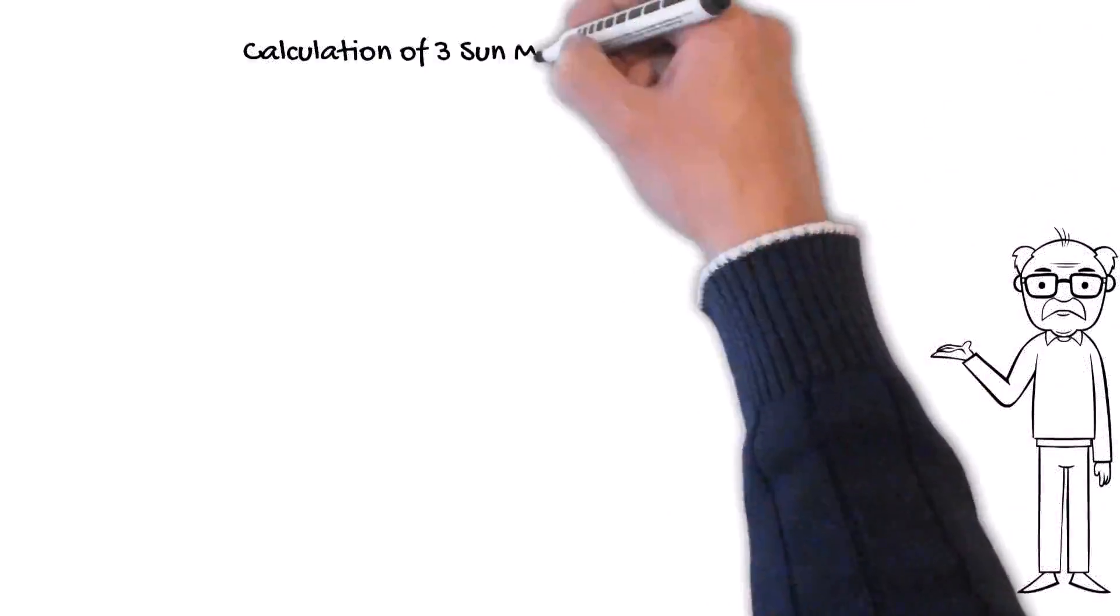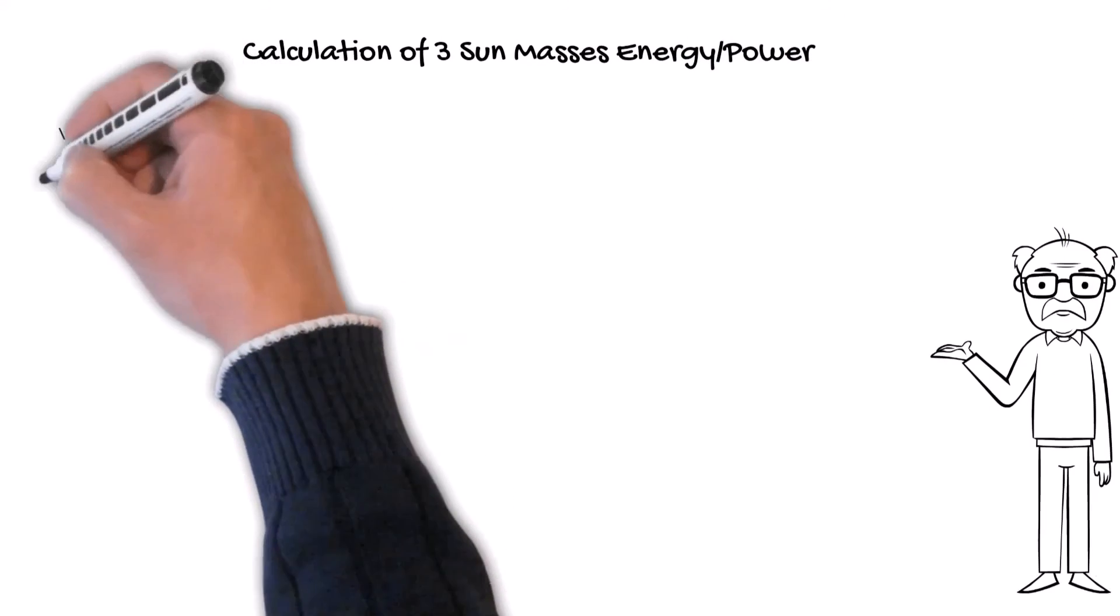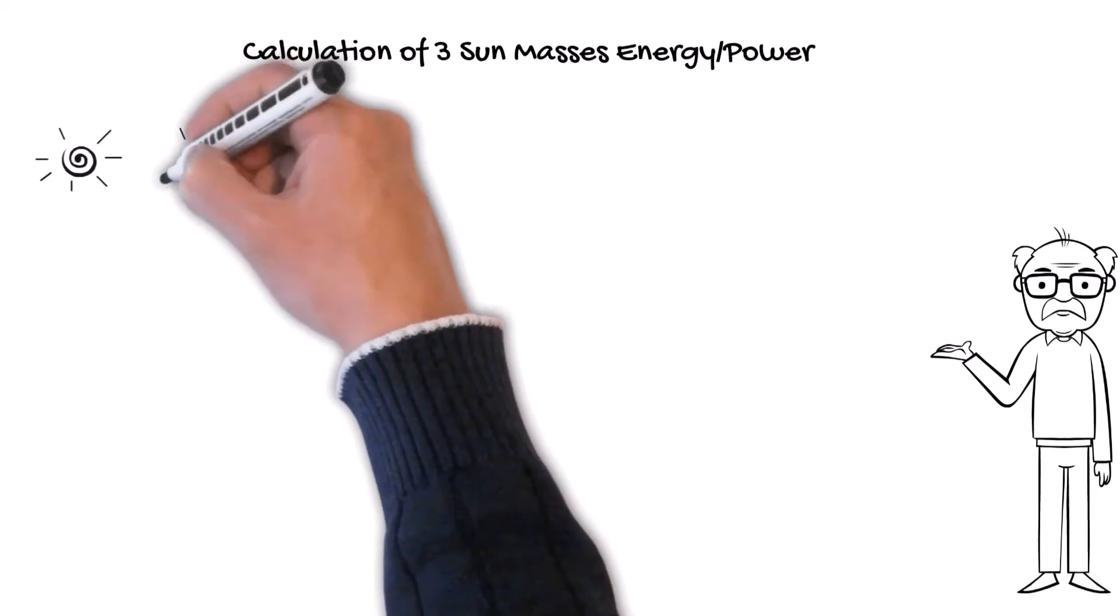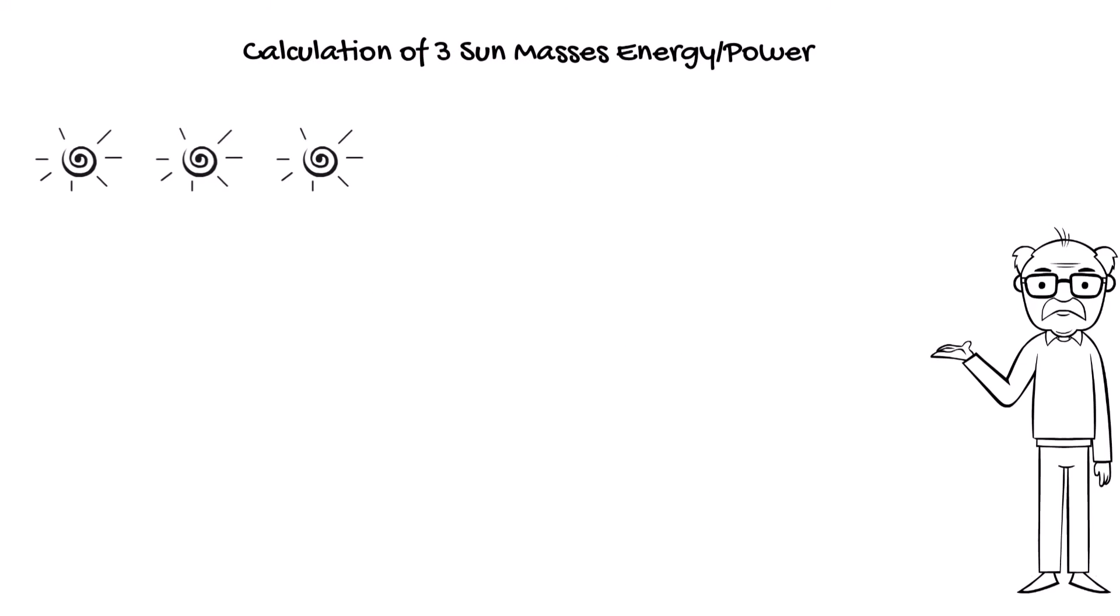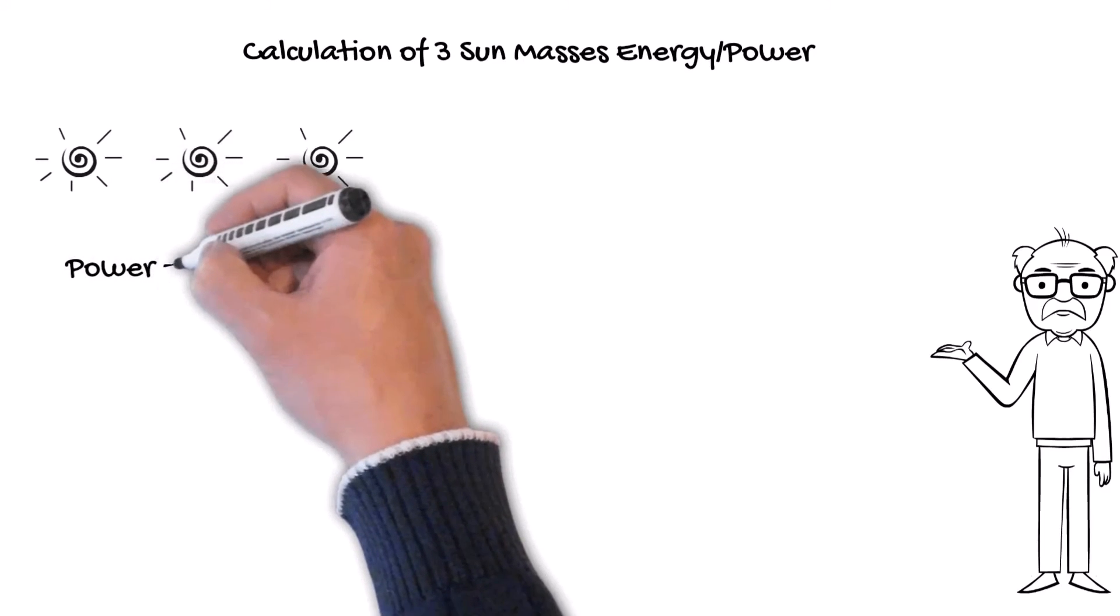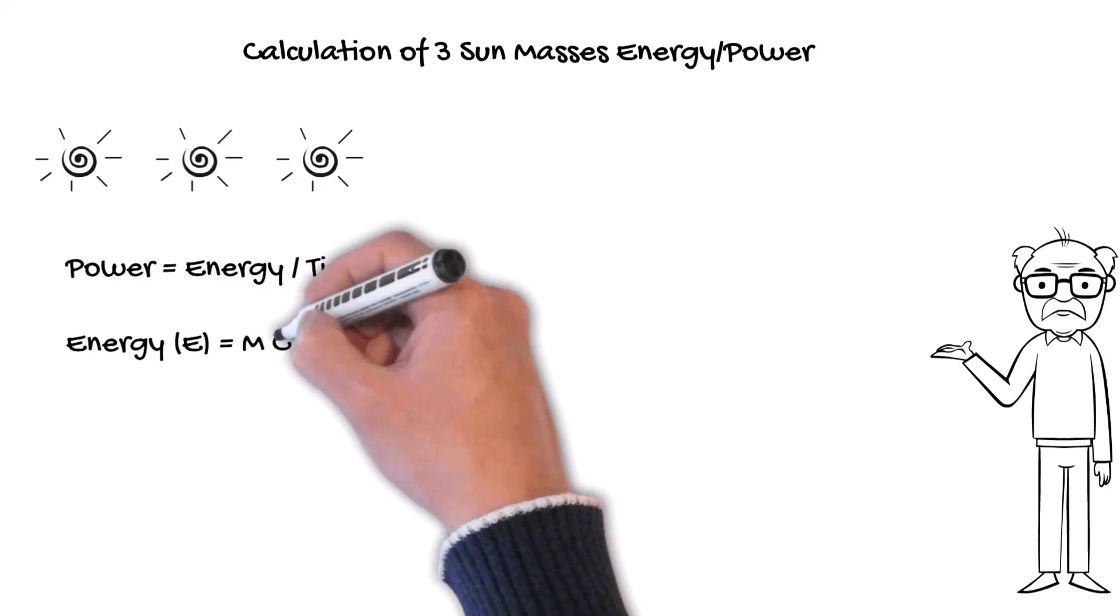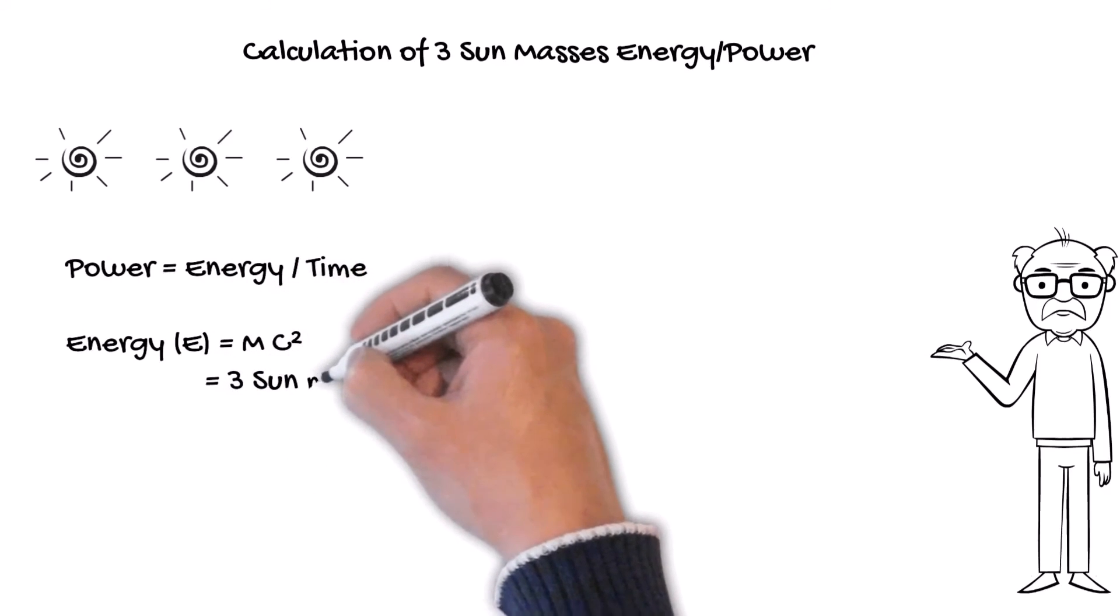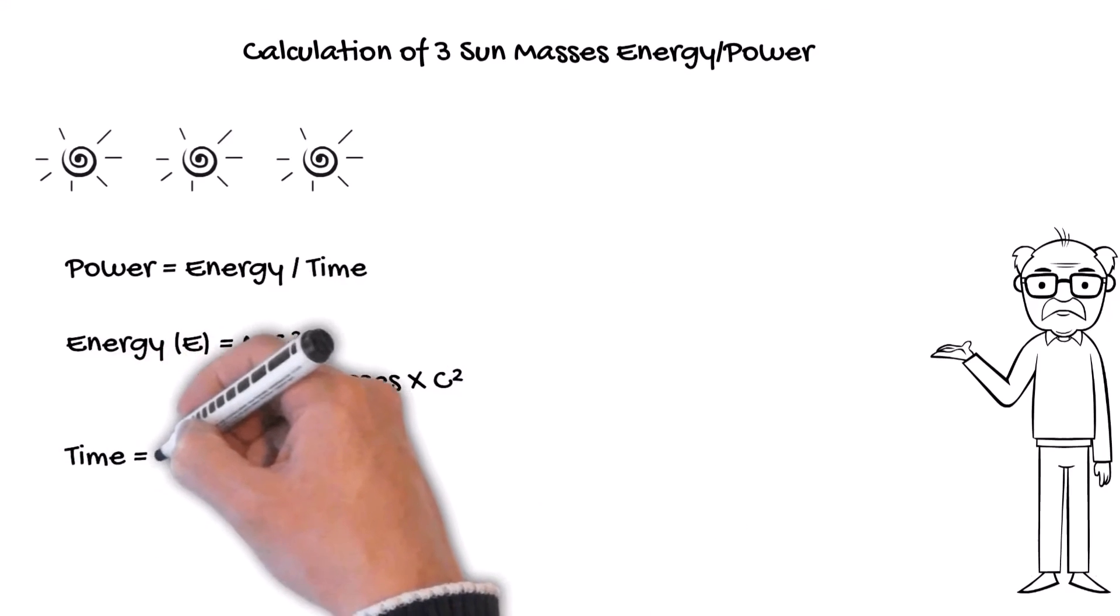The three sun's mass emitted during the immersion of the two black holes produced energy during 0.2 seconds that can be simply calculated. Power equals energy divided by time. Energy equals mc squared, where m is the mass of the three suns and c is the speed of light.